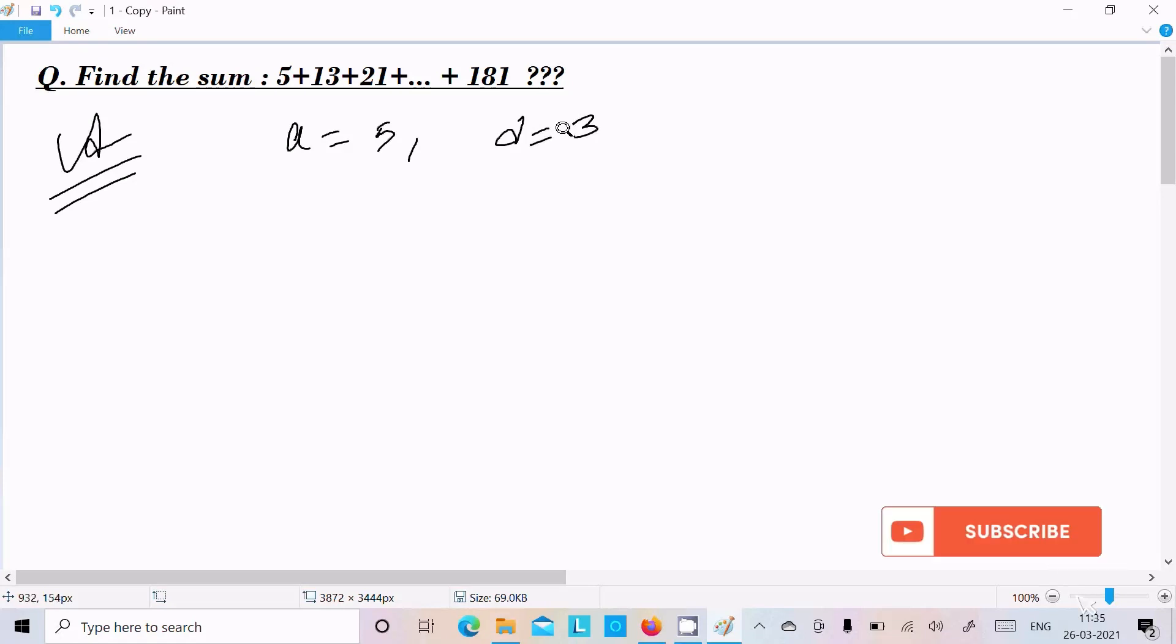Now the common difference, I'm going to calculate: 13 minus 5, or 21 minus 13. If you calculate here, common difference comes 8.